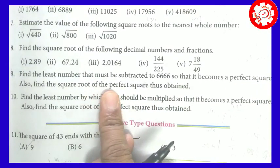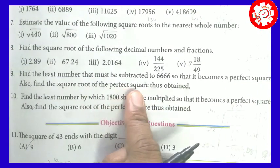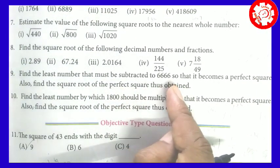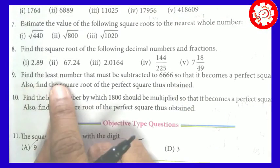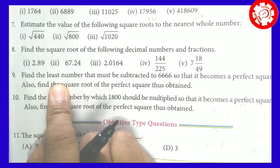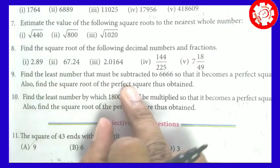Also, find the square root of the perfect square thus obtained. That means the least number is the smallest number.